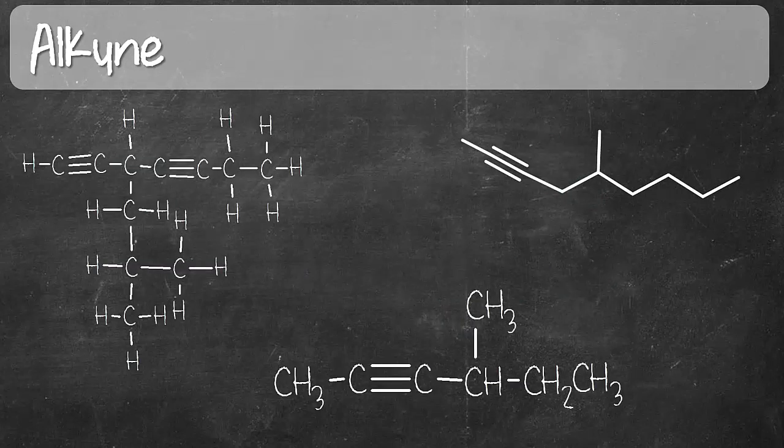Next is alkyne. Alkyne has a CC triple bond. So in the structures we look for the presence of CC triple bond. There may be more than one present but all you need to classify as alkyne is a presence of at least one CC triple bond.